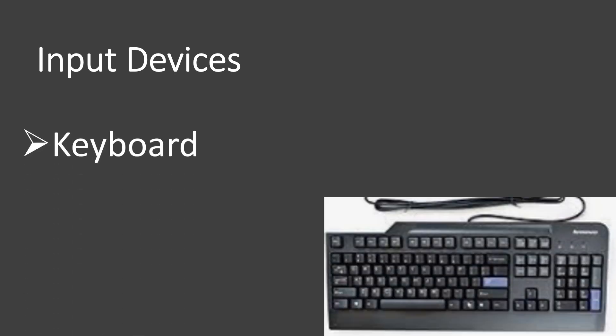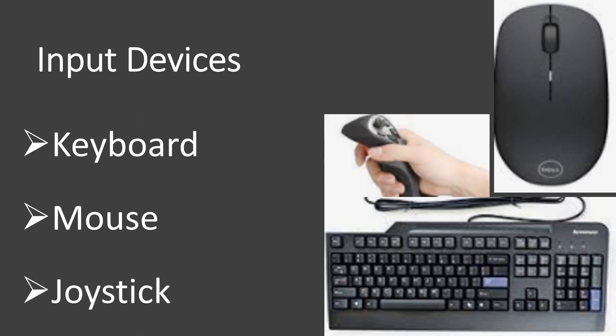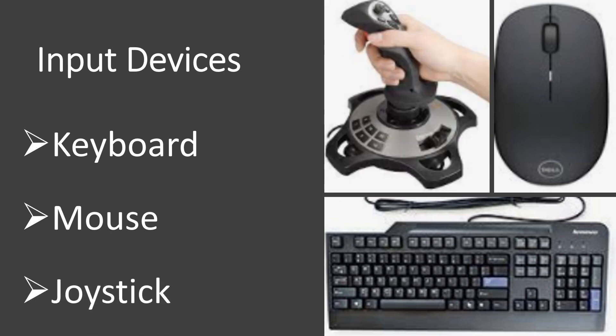Let me brief you more about these input devices. Keyboard helps to enter data and instructions using the keys. Mouse is a device used by pointing or clicking the object on the screen. Joystick controls movement of objects on the screen and is used for playing games.